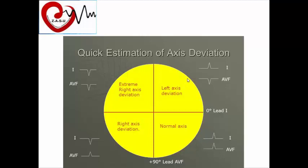There is also a quick method for estimating axis deviation. Look at lead 1 and AVF: if both are positive, there is normal axis; if both are negative, there is extreme right axis deviation; if lead 1 is positive and AVF is negative, it is left axis deviation; if lead 1 is negative and AVF is positive, it is right axis deviation. This is a rough but quick method to estimate the QRS axis in the frontal plane.